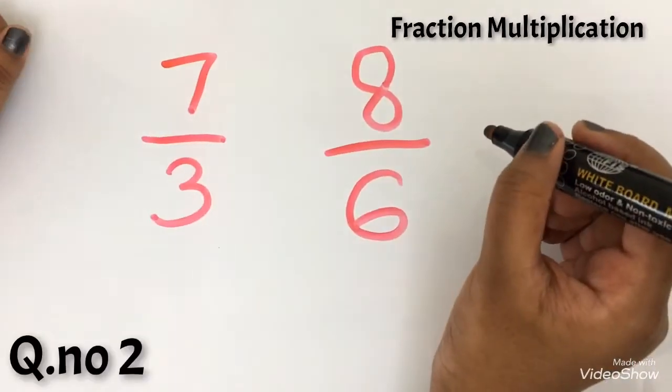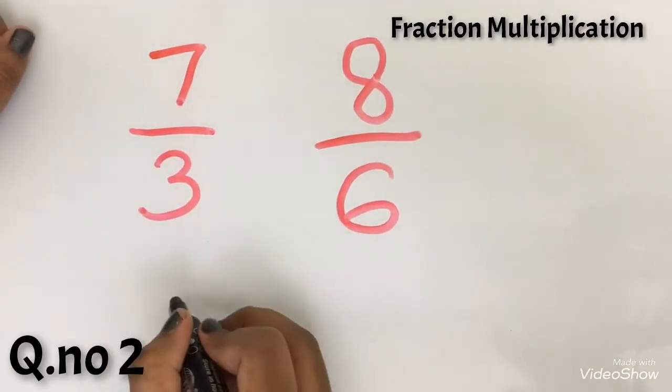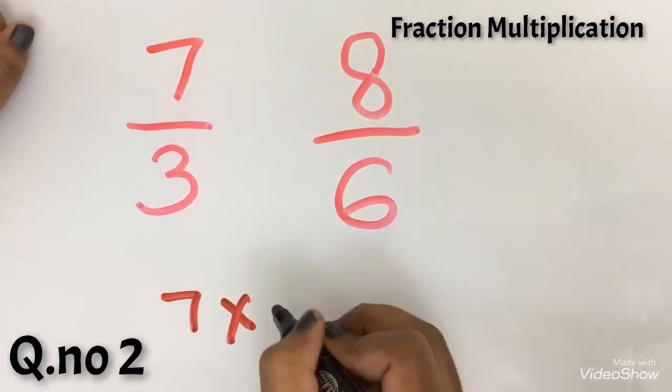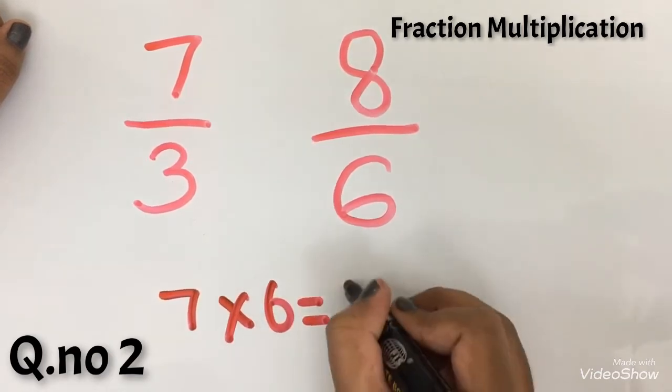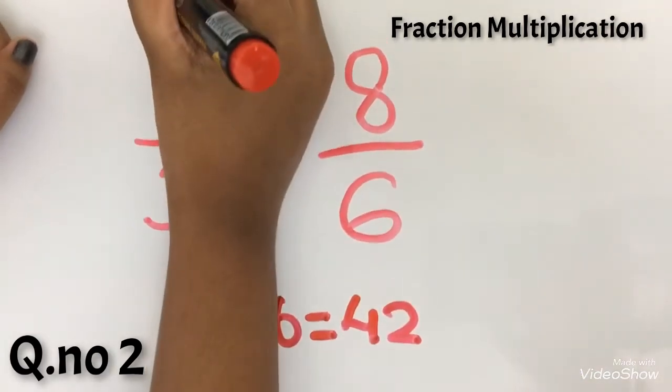Let's do cross multiplication. So 7 into 6. 7 into 6 equals 42. I am going to write it over here.